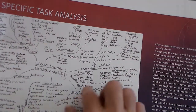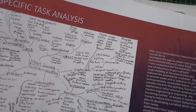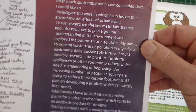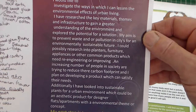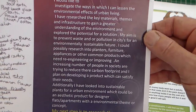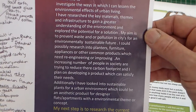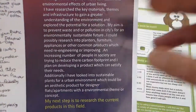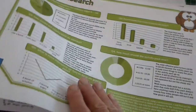This student here has used another spider diagram. If you look at this piece here, they have said about the understanding of the environment. Their aim is to prevent waste and pollution in cities for an environmentally sustainable future. They say they could possibly research into planters. So they're saying they've got the needs of the client and they're saying how can they look at that more closely.